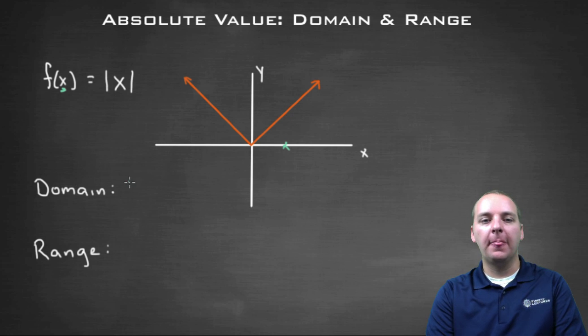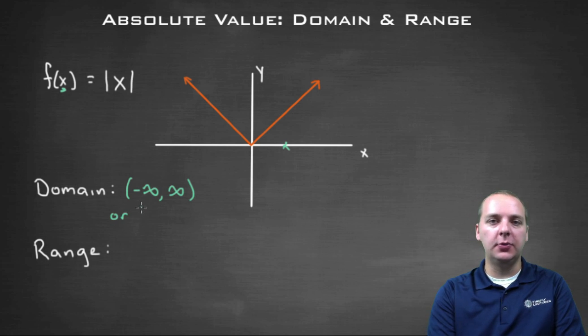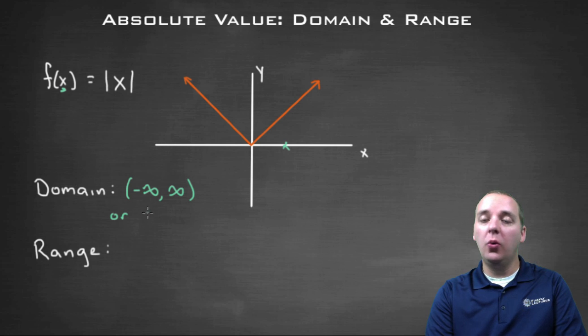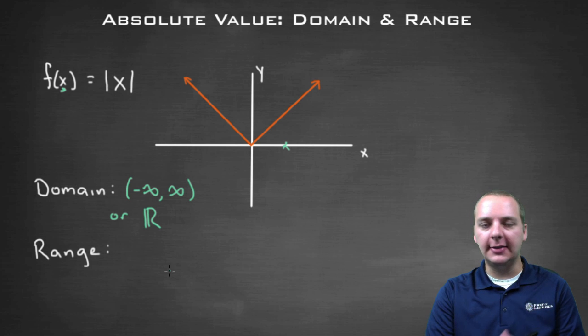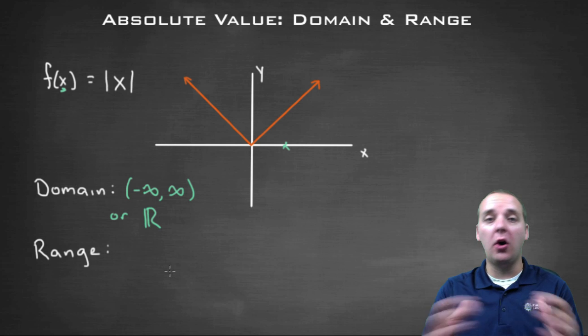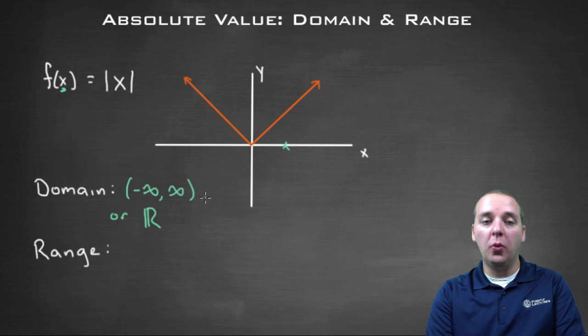There are different ways to write that. You can either write from negative infinity to infinity, or that's called interval notation which you're probably familiar with. Or you can write a capital R with an extra bar out front - that's math shorthand for the words all real numbers, basically saying your domain is all x values. Or you can write it out in English: all real numbers.